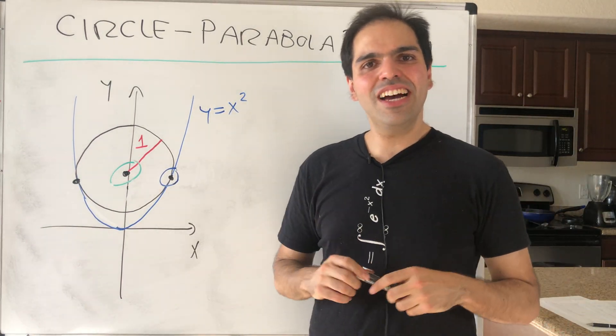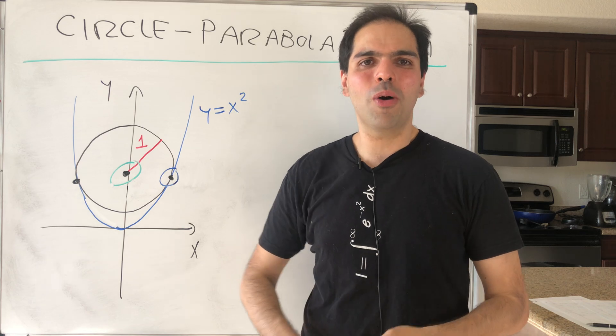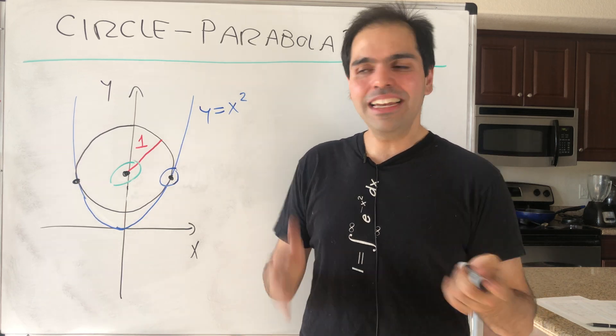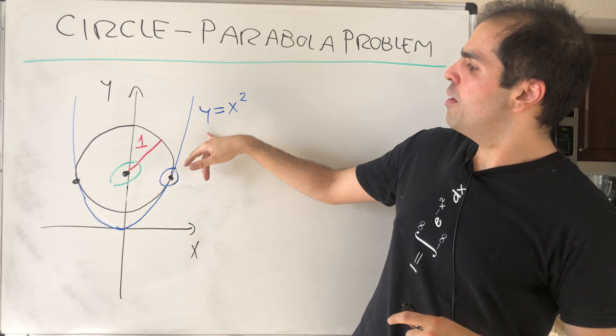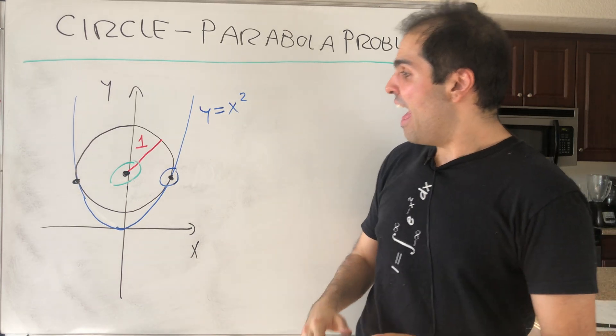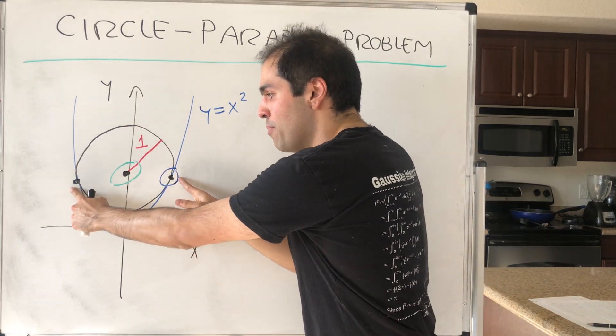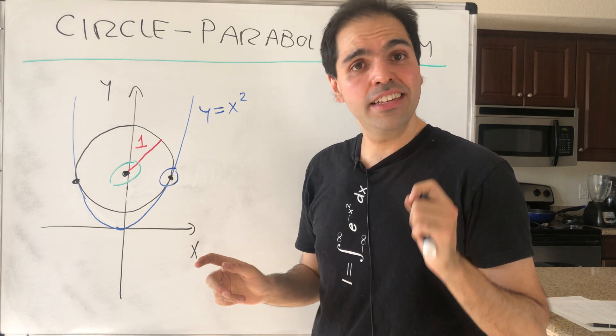All right, thanks for watching. Today I would like to cover a beautiful problem that I found on the UC Irvine Math Instagram page. Suppose you have a parabola y equals x squared, and you have a circle of radius 1 that is tangent to the parabola at precisely two points.